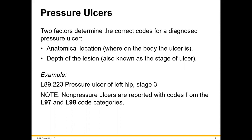Two things we want to make sure are documented by providers with these pressure ulcers are the location — in other words, left, right, elbow, shoulder, buttock, whatever it is — and the depth. The depth relates to the stage of the skin ulcer, and your book gives you a great breakdown of the difference between stage one versus stage three and so on. Please note that ulcers could be pressure or non-pressure. Non-pressure ulcers get coded to L97 and L98.